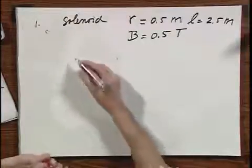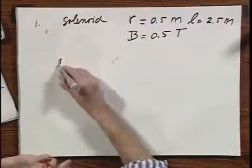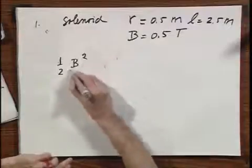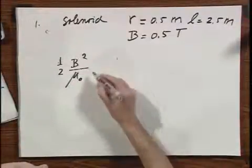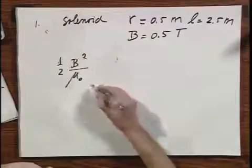The first question is how much energy is stored in that machine? Well, the magnetic energy per cubic meter, joules per cubic meter, is given by this relationship. You have seen this several times.